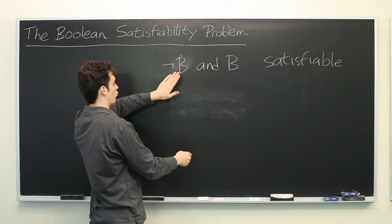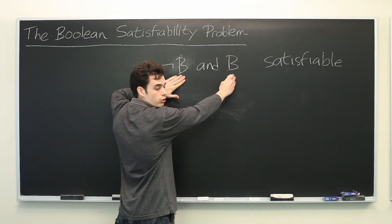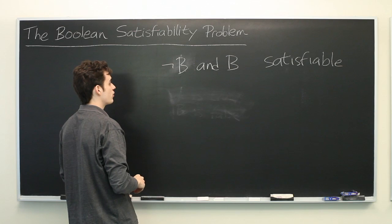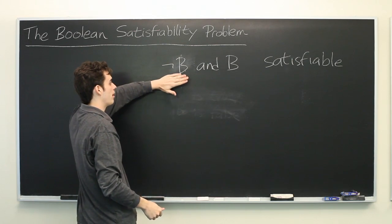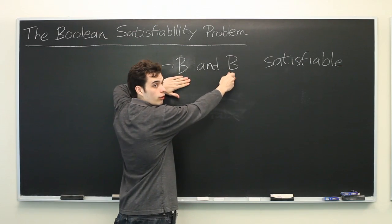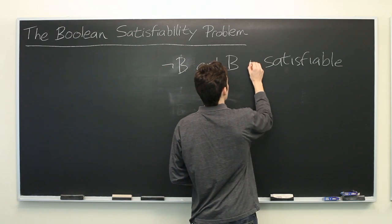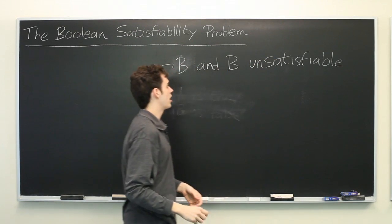If B is true, this will become not true and true, which is false. If we say B is false, this will become not false and false, which again is false. So this would be unsatisfiable.